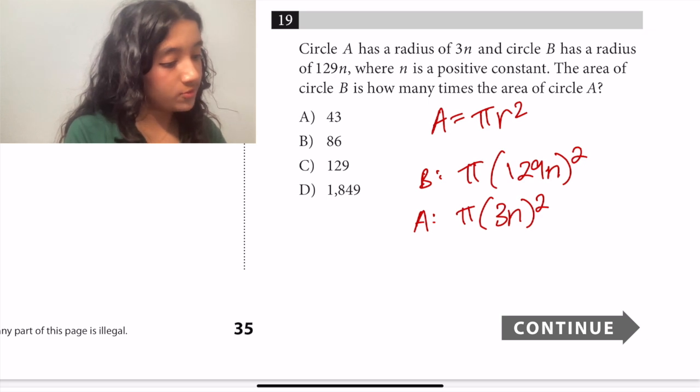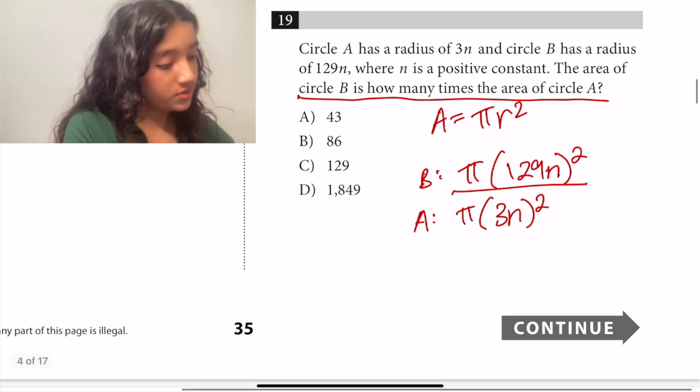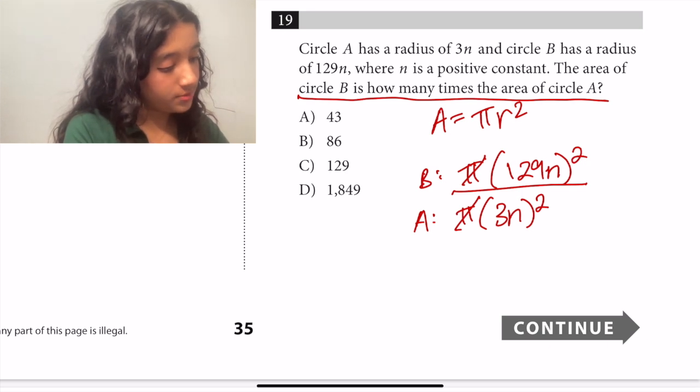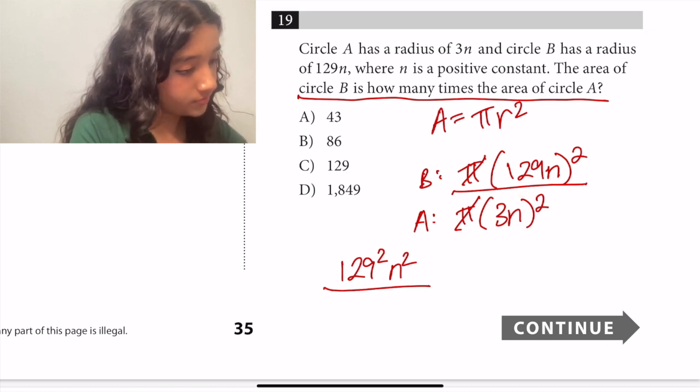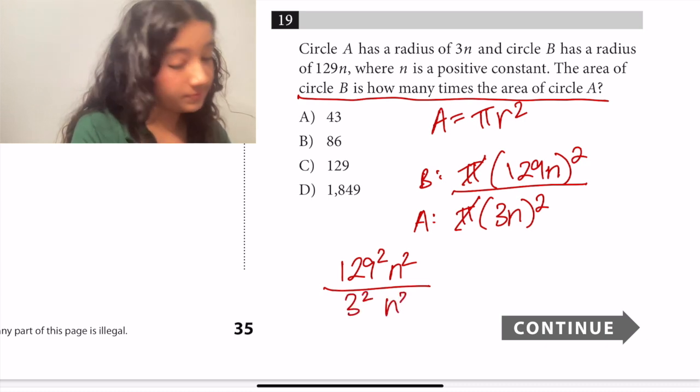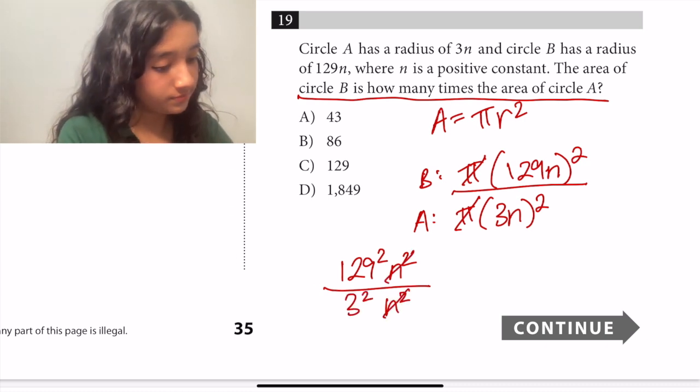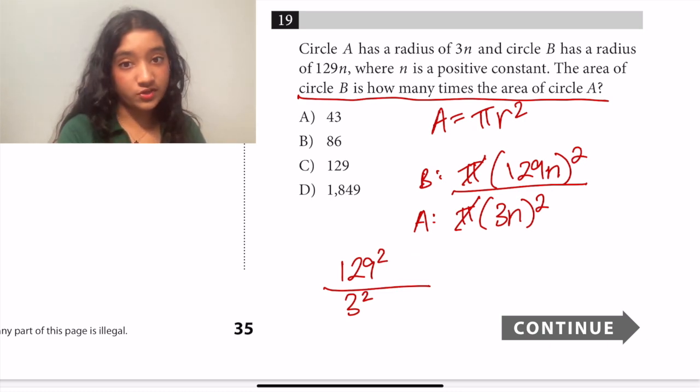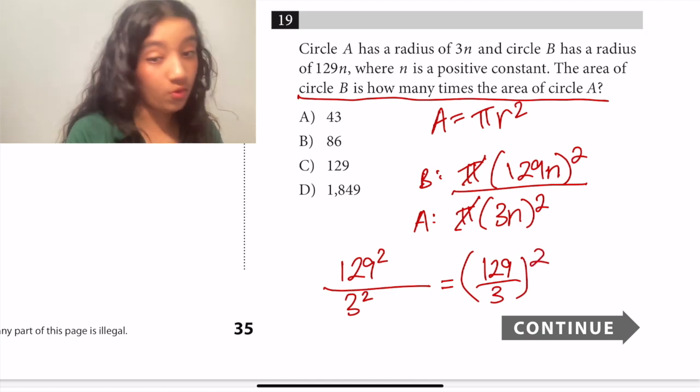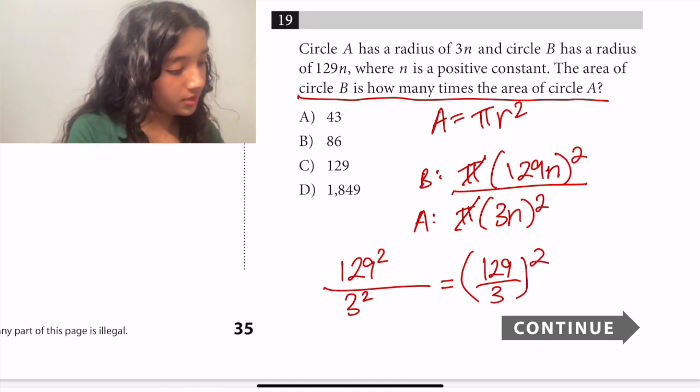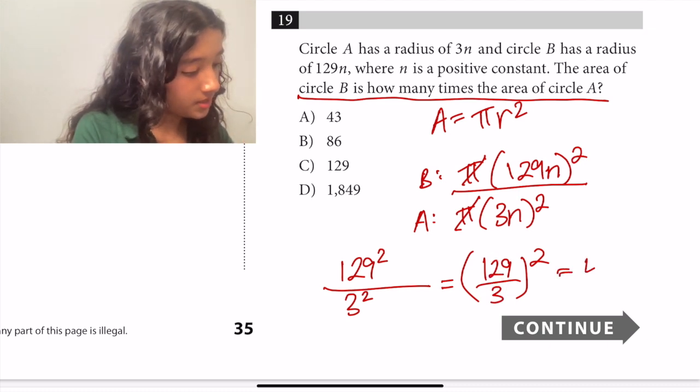So that's π times 3n because that's our radius squared. And we want to find out how much larger the area of B is than the area of circle A. So that means we're dividing them. So we notice that our π's cancel out and we can also distribute the square. So in this case it'll be 129 squared times n squared divided by, and we do the same thing to the denominator, 3 squared times n squared. So we can cancel out the n squared. So that'll just leave us with 129 squared divided by 3 squared. However we can simplify this to 129 divided by 3 and the whole thing is squared. So 129 divided by 3, well we know that 12 divided by 3 is 4 and then 9 divided by 3 is 3. So that's 43 squared.